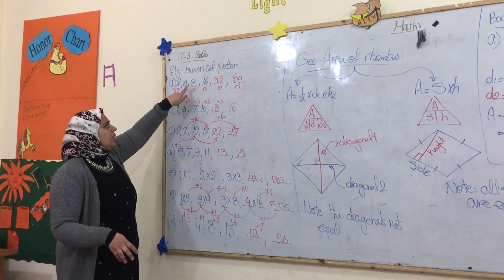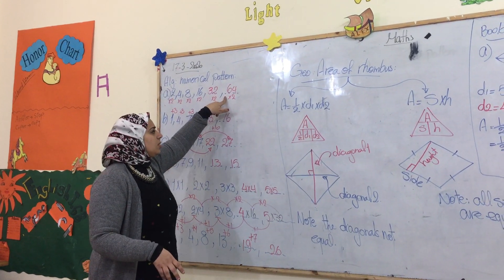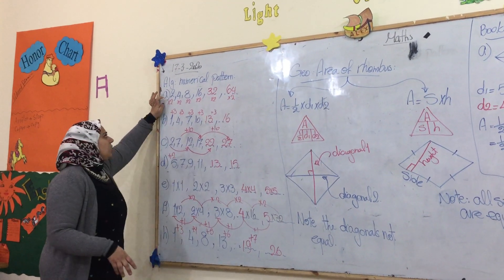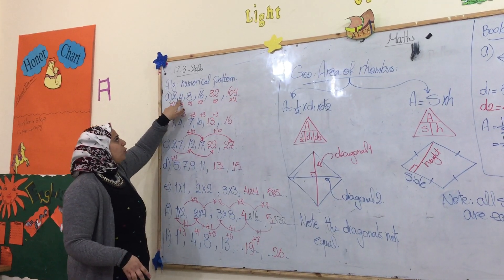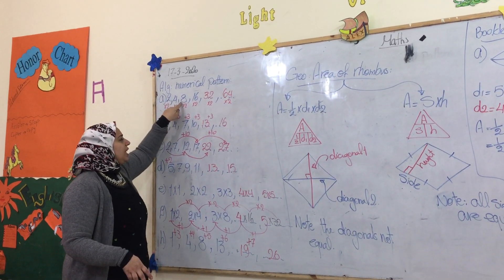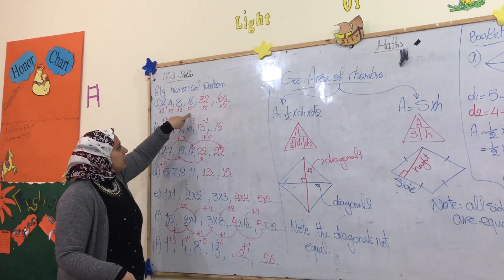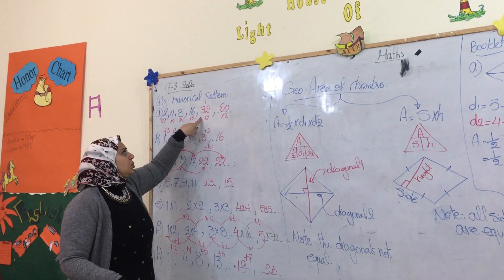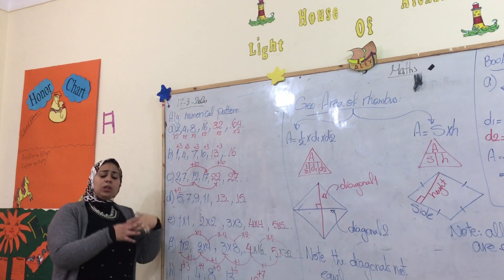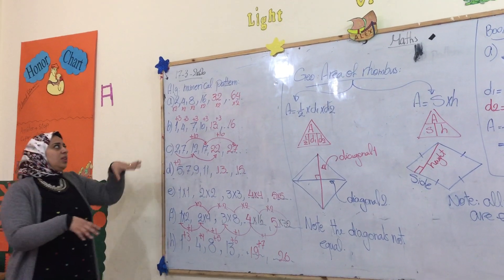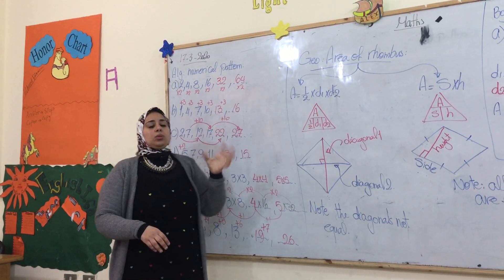2, 4, 8, 16. He wants us to find the pattern for all these parts. So we can double the number: 2 multiplied by 2 equals 4, 4 multiplied by 2 equals 8, 8 multiplied by 2 equals 16. So 16 multiplied by 2 equals 32, 32 multiplied by 2 equals 64. Each time you multiply by 2. In each part, I multiply by 2 to get the result.